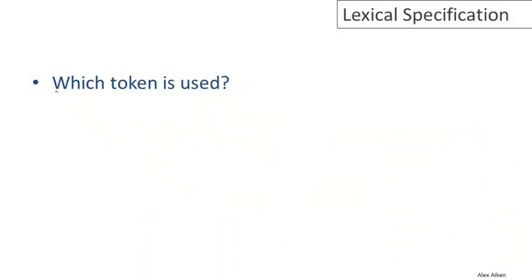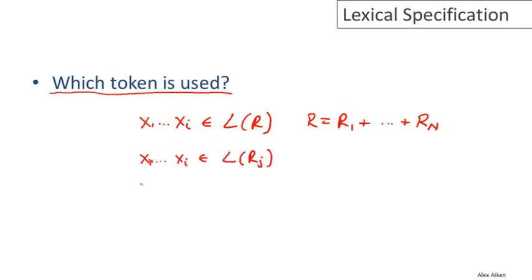A second question is which token should be used if more than one token matches? So what do I mean by that? Well, again, we have our prefix of the input and it's in the language of our lexical specification. And just remember that the lexical specification itself is made up as the union of a bunch of regular expressions for token classes. Now, since this prefix is in the language of the lexical specification, that means that it must be in the language of some particular token class, RJ. But nothing says that it isn't also in the language of a completely different token class. Meaning that this same string could be interpreted as one of two different tokens. And the question is, if this happens, which one should we pick?